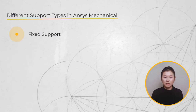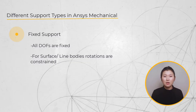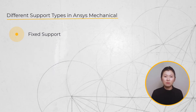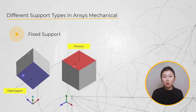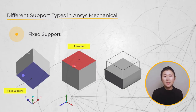The first one is a fixed support. All degrees of freedom are fixed or constrained for the scoped locations when this support type is used. For a surface or line body, the rotations will be constrained as well. One should be aware of the possibility of over-constraining, because the nodes on a fixed face cannot move at all. With a fixed support on one end and a pressure load on the opposite side, we end up with a bulging of the material at the sides, which may or may not be what you want.